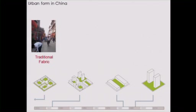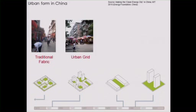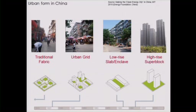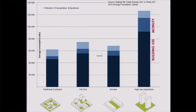Drilling down a bit further, it's interesting to look at how form evolved in China. This was the traditional urban fabric found before the 1920s. They imposed a grid in the 1920s based on modernist thinking from Europe, then brought in Soviet-era thinking in the 1980s with six- and seven-story blocks, and now they have high-rise superblocks. What's particularly interesting is if you look at the energy consumption in each of these forms, we're going in exactly the wrong direction.